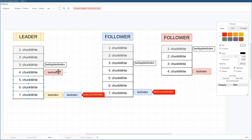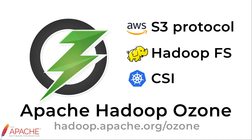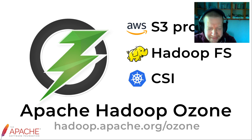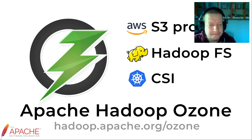That is the overall picture of the Raft protocol and how it is used inside Apache Hadoop Ozone data nodes. There are more questions — for example, how exactly to store something in the data node and what fits in the state machine — but those will be discussed in a next video.